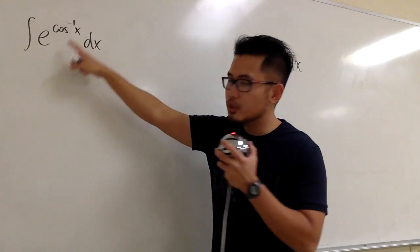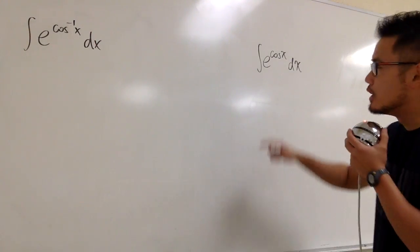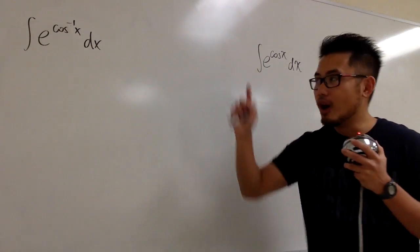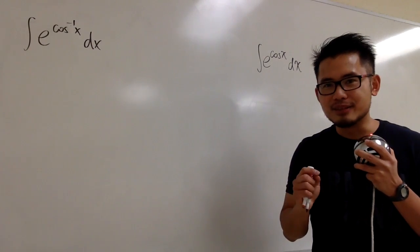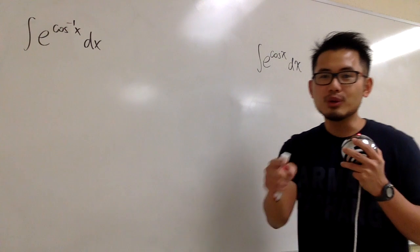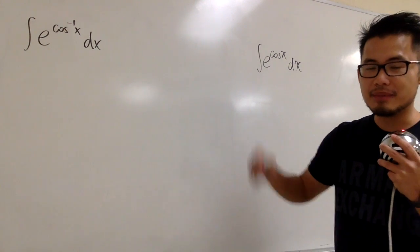The first one, we have the integral of e to the inverse cosine x. The second one, we have the integral of e to the cosine x. In this case, only one of them has an answer, and the other one is not doable. But which one is what? Why don't you pause the video and give them a try?